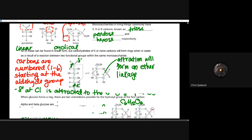Carbons can be numbered from one to six, and it always starts at the aldehyde group. That's why it's so important that we recognize how to identify those functional groups — knowing where the first carbon starts, it's going to start at that aldehyde group. That slightly positive polar charge is going to be attracted to that slightly negative charge, and as a result, it forms that ring structure.